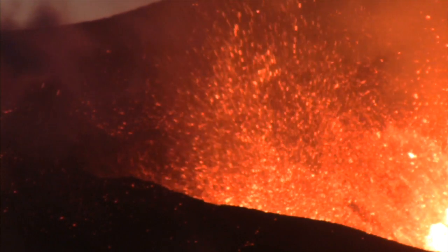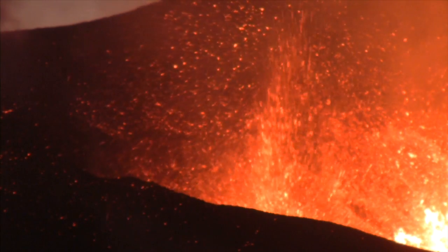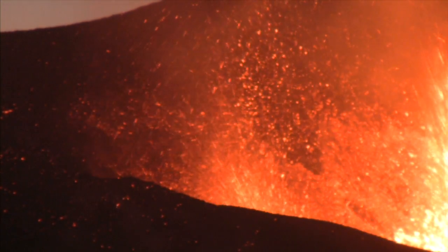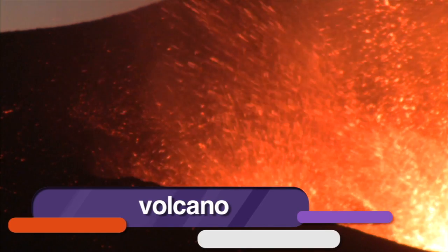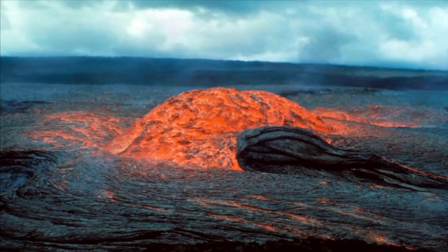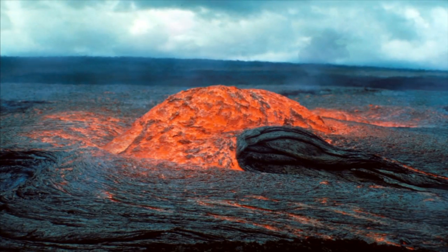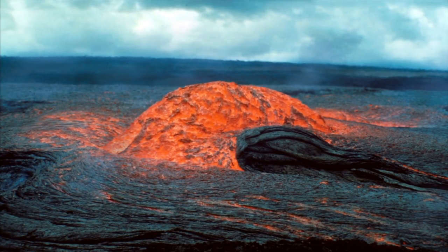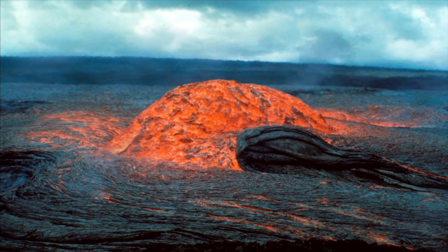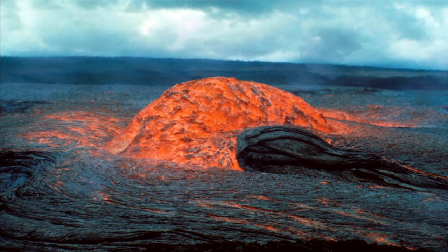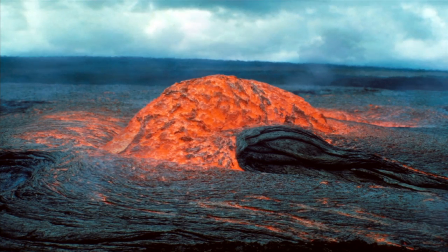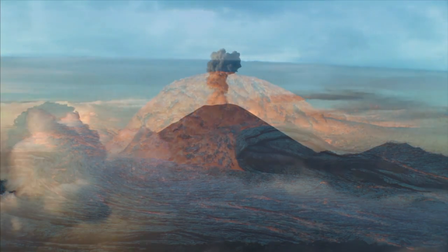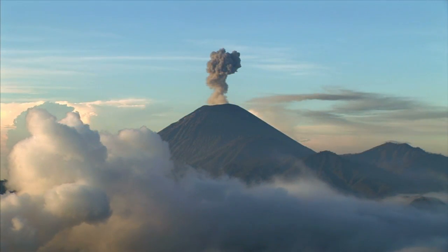Sometimes melted rock from deep inside the earth, called magma, forces its way through the crust — we call this a volcano. When the magma oozes out of the earth we call it lava. As the lava cools, it turns into solid rock, and that's the beginning of a mountain. There are active volcanoes all over the world.